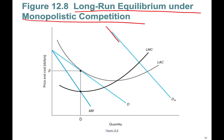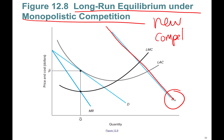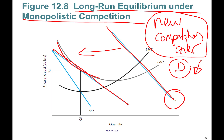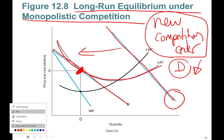In the long run, new competitors enter the market and take away your market share — they eat into your demand. As a result, the demand curve shifts to the left, and it keeps shifting until the demand curve is tangent to the long-run average cost curve at one point.